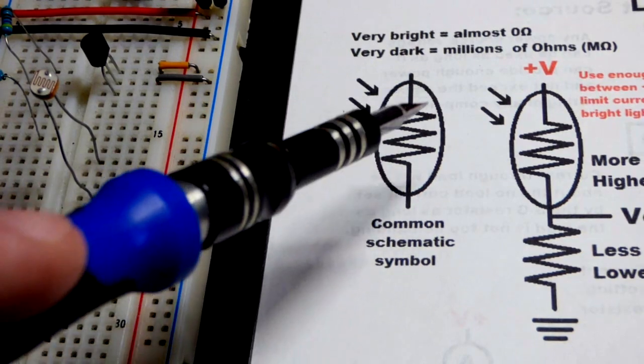In this video, we're going to look at the light dependent resistor. It has the schematic symbol that usually looks like this - a resistor symbol with a circle around it, and then arrows indicating it's being hit by light when it is used.